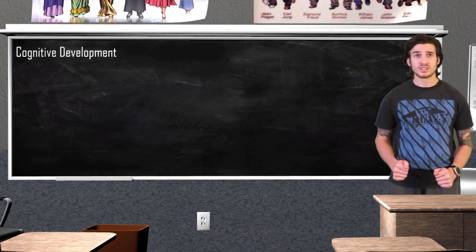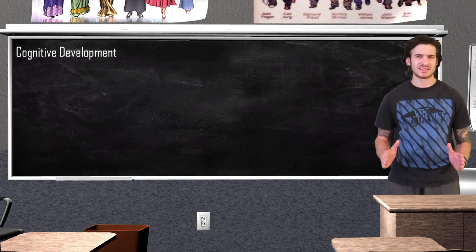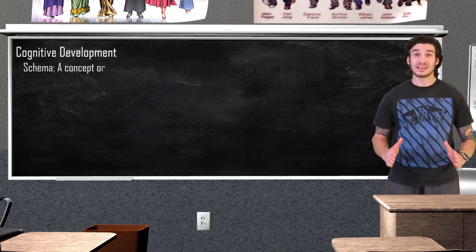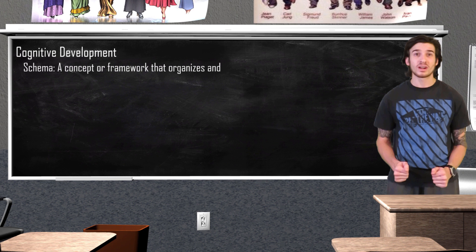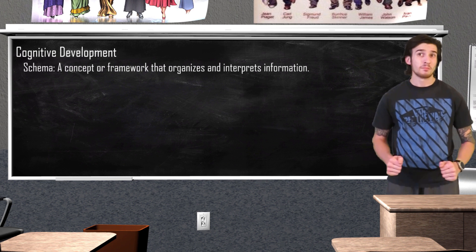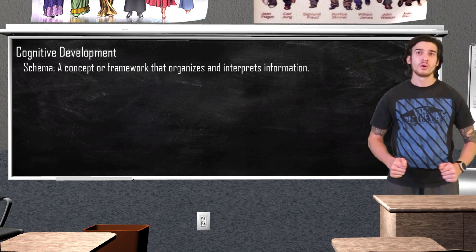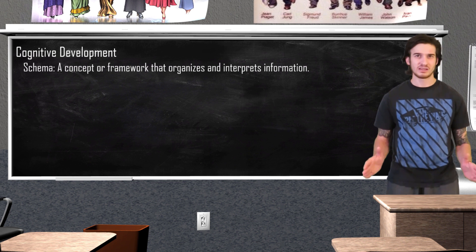Piaget believes that children are active thinkers who are constantly trying to make sense of the world. In doing so, they construct schemas. A schema is just a concept or framework that organizes and interprets information. By the time we have reached adulthood, we have created countless amounts of schemas.